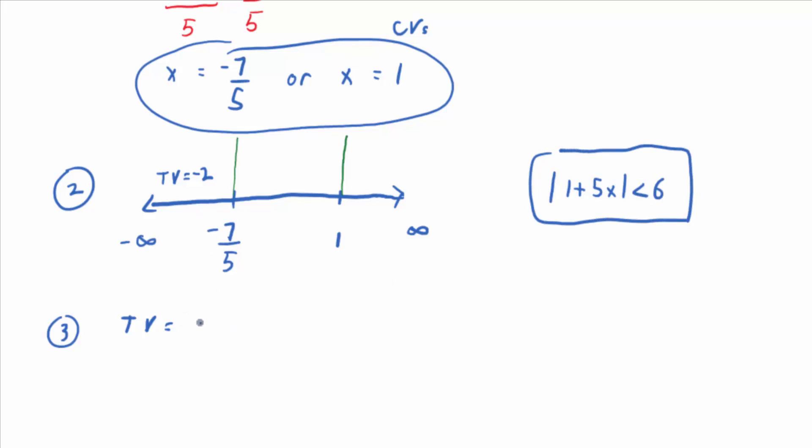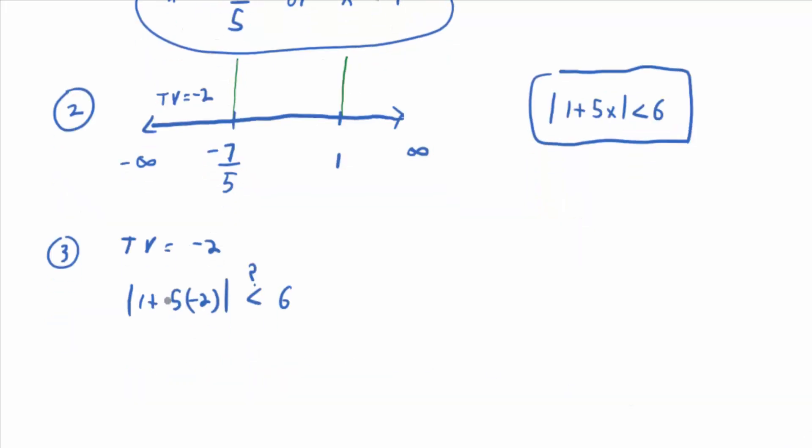So if we plug a negative 2 into that, do we get a true statement? No. So 1 plus 5 times negative 2. Ask yourself is that less than 6? It's certainly not because you actually get negative 10 plus 1 which is negative 9. Is the absolute value of negative 9 less than 6? No.